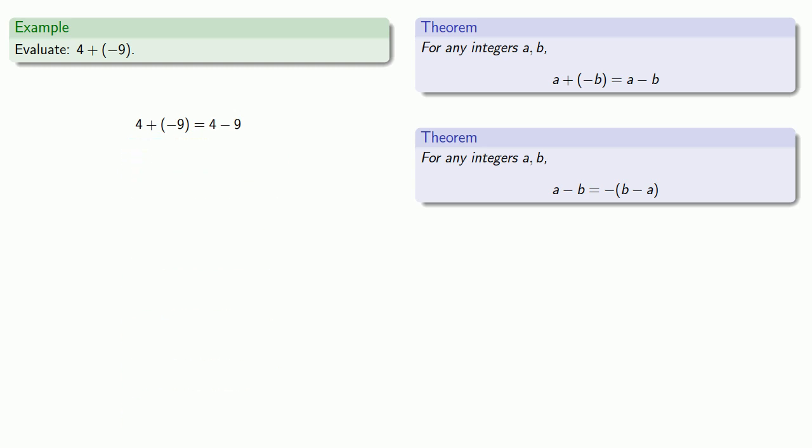But I have a theorem that says that a minus b is the same as the additive inverse of b minus a. So if I can't find 4 minus 9, I can find the additive inverse of 9 minus 4.